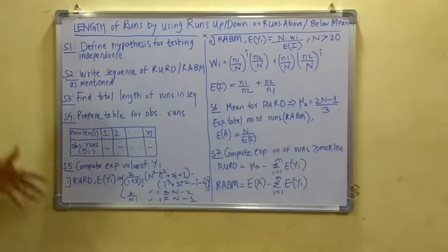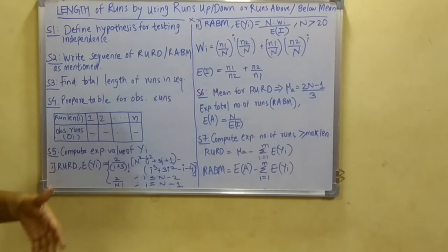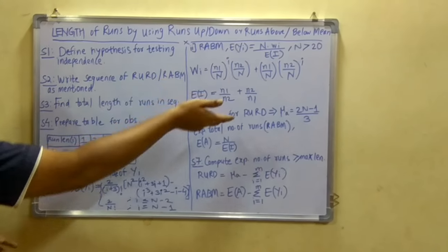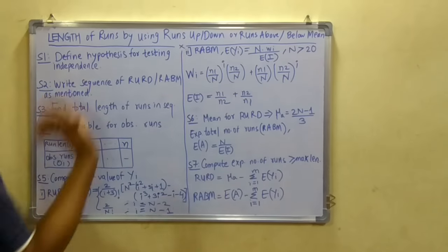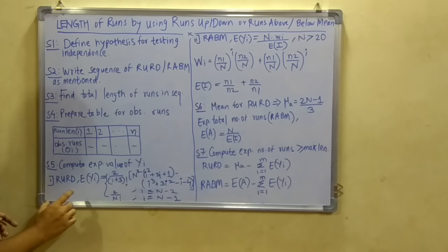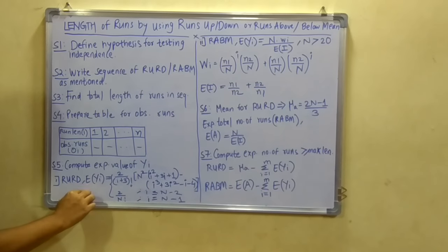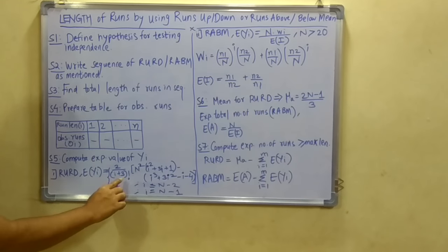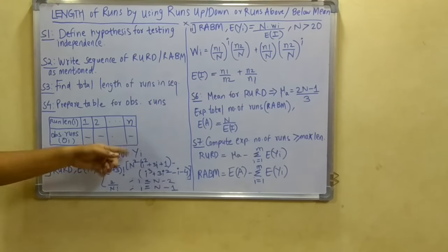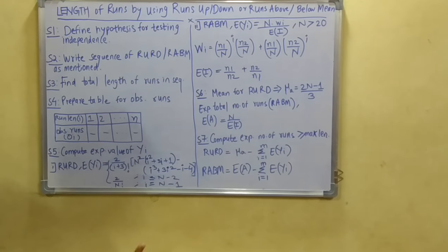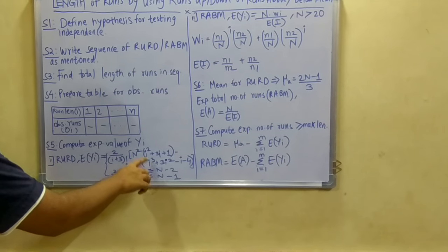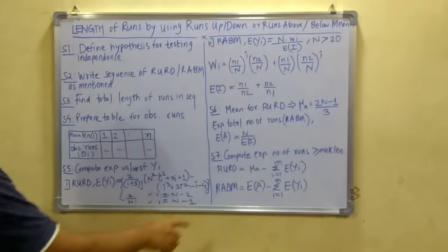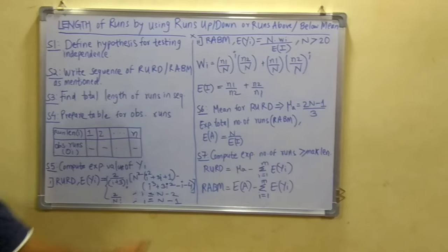Next, after you do this, you have to compute the expected value of yi. Now yi is computed for both testings: RURD as well as RABM. First for RURD, you will compute the expected value of ei as E(yi) equals 2 divided by (i + 3)! multiplied by n² times (i² + 3i + 1) minus (i³ + 3i² - i - 4).